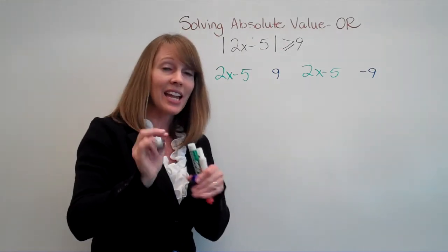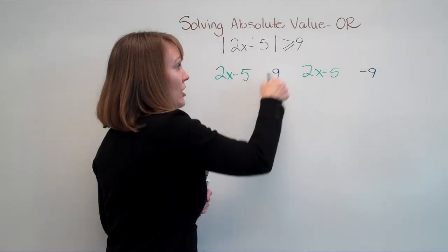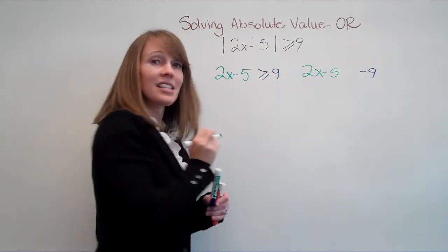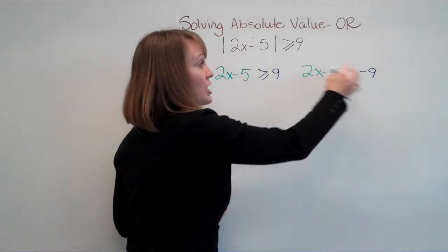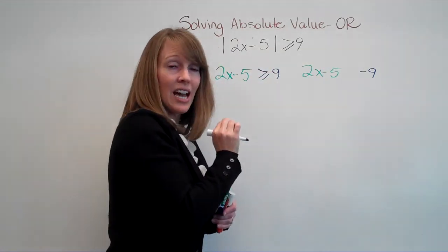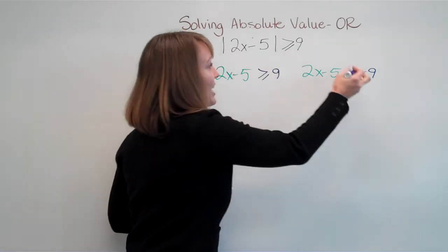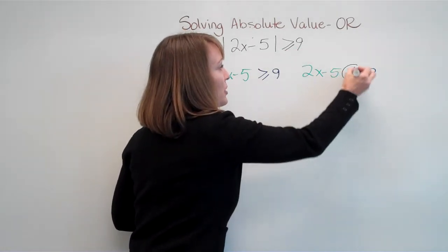Now we have to add in that inequality sign. So since he was good here, nothing changes here. It's the same sign. But here, since we changed the 9 to a negative, we need to change that inequality and flip it around right there.